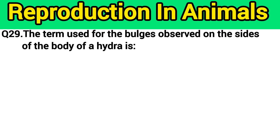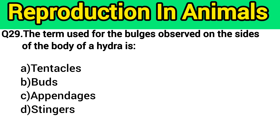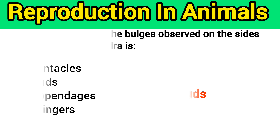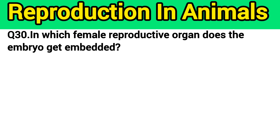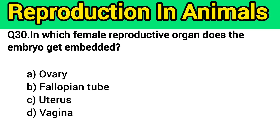Question number 29: The term used for the bulges observed on the sides of the body of hydra is? The right answer is option B — buds. Question number 30: In which female reproductive organ does the embryo get embedded? The right answer is option C — uterus.